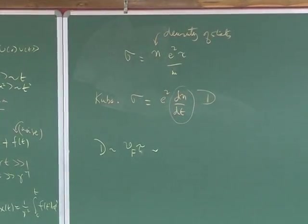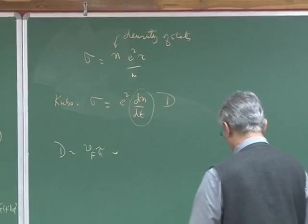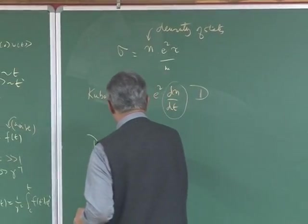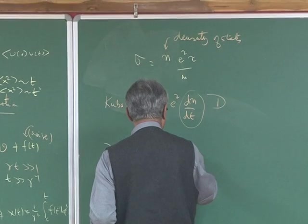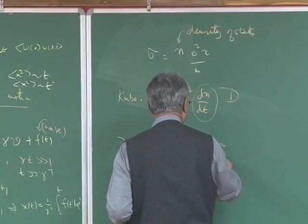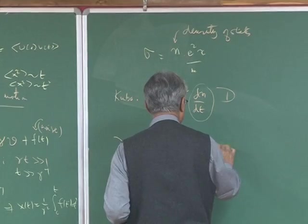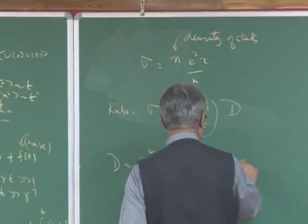So it's actually Vf times Vf tau. And that's exactly what Dmitra said: it's Vf times L, the mean free path.